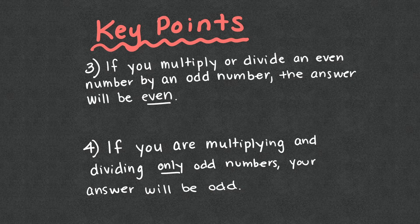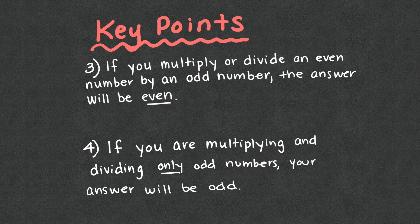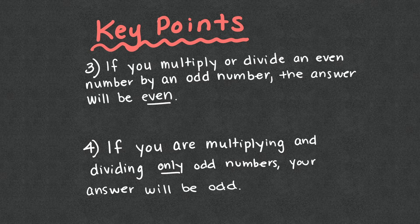Key point three: if you multiply or divide an even number by an odd number, the answer is always going to be even. So if an even number is involved in any multiplication or division with odd numbers, your answer is always going to be even. You could prove this to yourself — try it out. And four: if you're multiplying and dividing only odd numbers — meaning the problem only includes odd numbers — then your answer is going to be odd. That's the way you're going to get odd numbers in your answers.